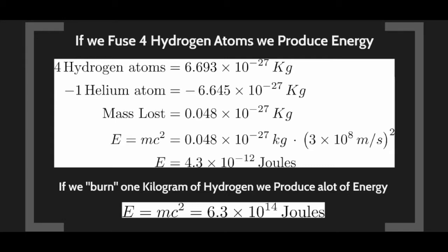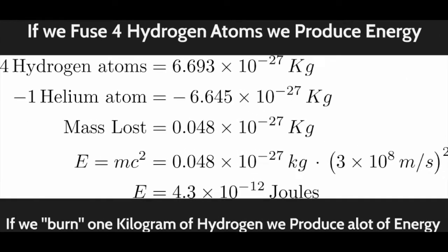If you take four hydrogen atoms you have a total mass of 6.7 times 10 to the minus 27 kilograms. If you subtract off the mass of the resulting helium, which is 6.6 times 10 to the minus 27 kilograms, you find that you lose 0.048 times 10 to the minus 27 kilograms of mass. That mass is converted to energy — 4.3 times 10 to the minus 12 joules.